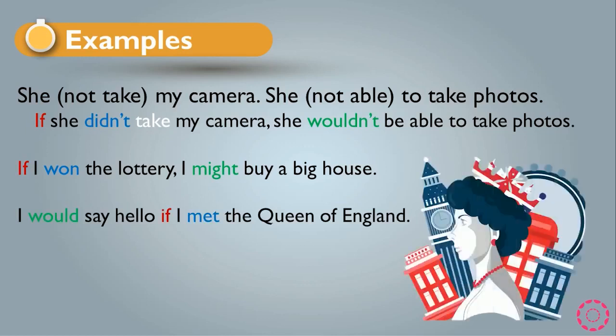Another example: 'I would say hello if I met the queen of England.' Here 'if' is used in the middle of the sentence, so we follow the second rule. The main clause 'I would say hello' comes first, and the past simple clause 'if I met the queen of England' comes at the end. This expresses something that will never happen or is impossible.